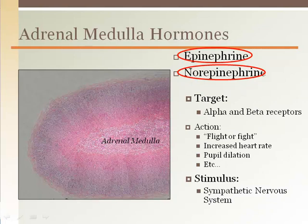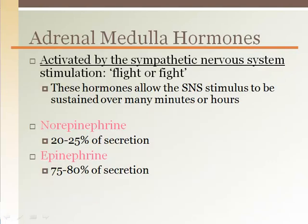The adrenal medulla secretes hormones of the sympathetic nervous system: epinephrine and norepinephrine. They target alpha and beta receptors, which have a multitude of functions all over the body. Their collective effects follow the fight-or-flight rule, such as increased heart rate and pupil dilation. Anything that activates your autonomic nervous system sympathetic response, like being scared, will increase the release of these hormones. The release of these adrenal medulla hormones allows our heightened physiological response to danger to be sustained over a longer period of time.